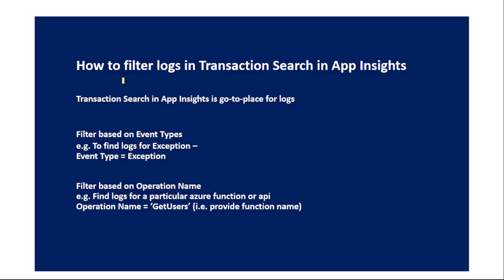In this video, let's discuss how we can filter logs in transaction search in App Insights. I want to show you a couple of important filters which we may use frequently. Transaction search in App Insights is normally our go-to place for logs. We will first discuss filter based on event types — for example, if you want to find logs only for exceptions.